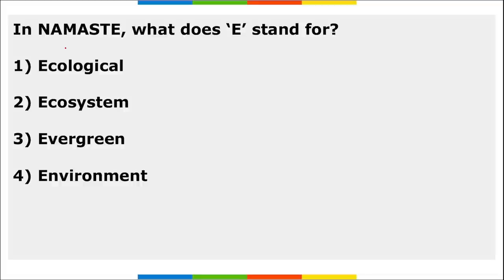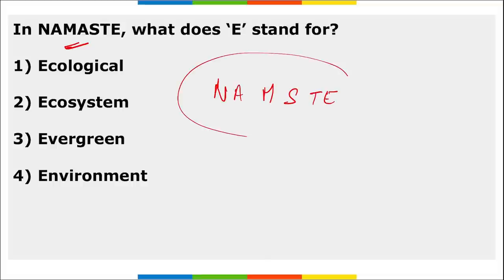What is NAMASTE? The Government of India formulated the NAMASTE scheme for cleaning of sewers and septic tanks. NAMASTE stands for National Action Plan for Mechanized Sanitation Ecosystem. It is a joint venture of the Department of Drinking Water and Sanitation, the Ministry of Social Justice and Empowerment, and the Ministry of Housing and Urban Affairs. NAMASTE replaces the Self-Employment Scheme for Rehabilitation of Manual Scavengers introduced in January 2007.